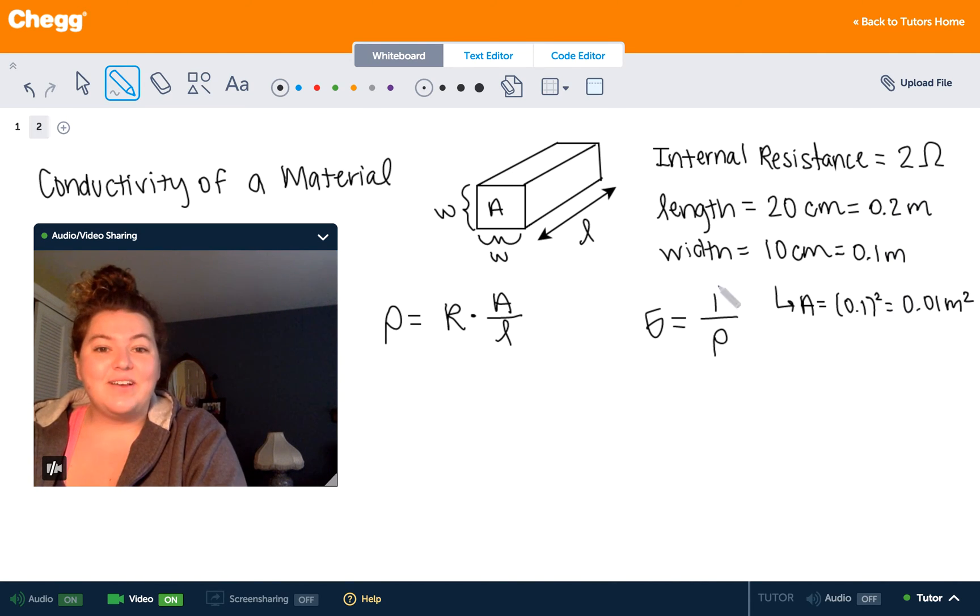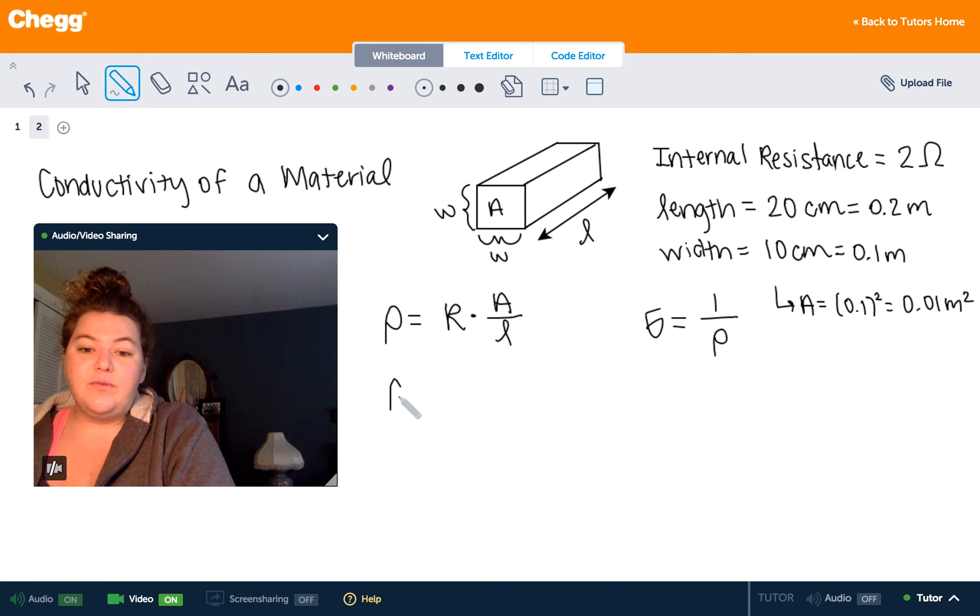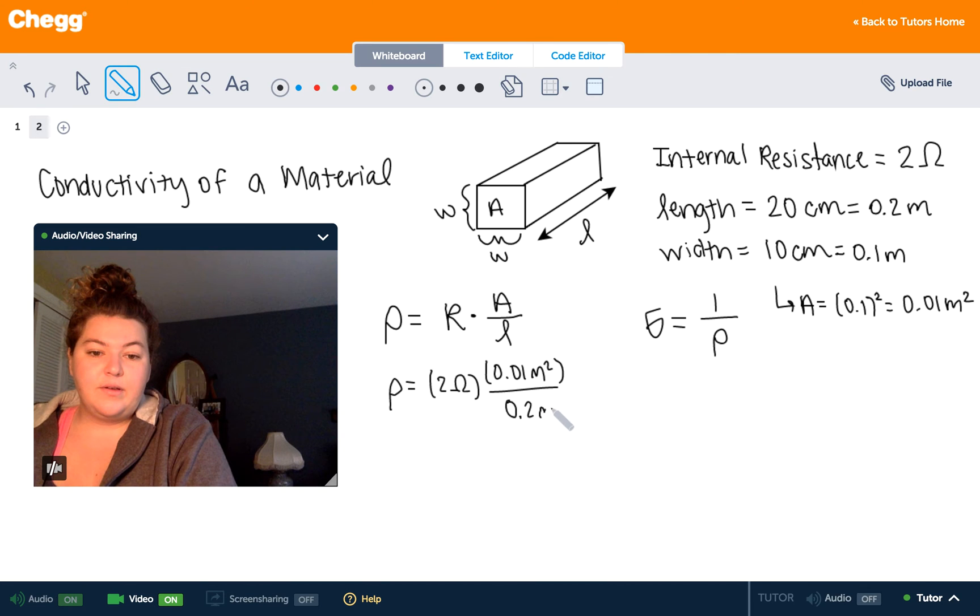Now we have everything that we need to find the resistivity of this material. So resistivity is equal to the internal resistance, which we have 2 ohms, times the area, we have 0.01 meters squared. And divided by the length, we have 0.2 meters.